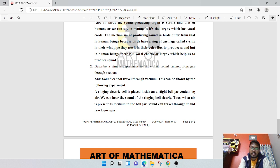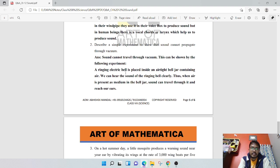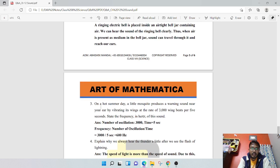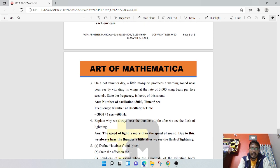Describe a simple experiment to show that sound cannot propagate through vacuum. Sound cannot travel through vacuum. This can be shown by the following experiment: a ringing electric bell is placed inside a bell jar containing air. We can hear the sound of the ringing bell clearly. Thus, when air is present as a medium in the bell jar, sound can travel through it and reaches our ear.